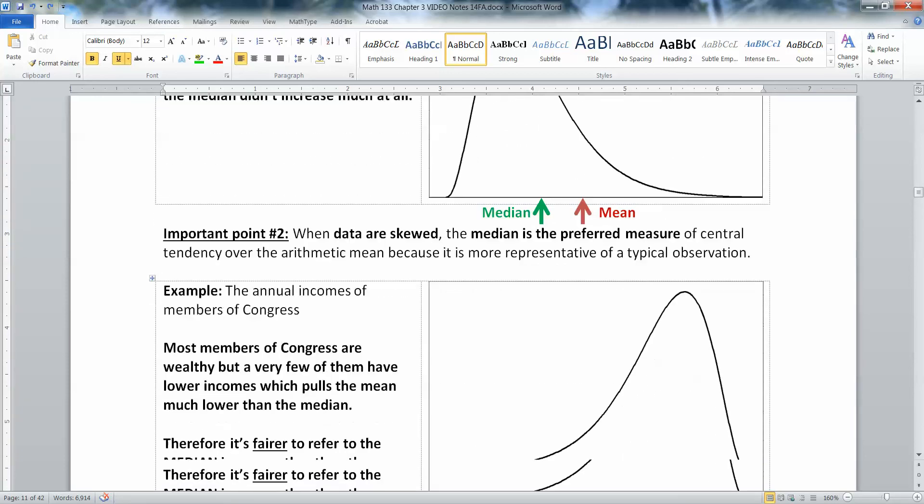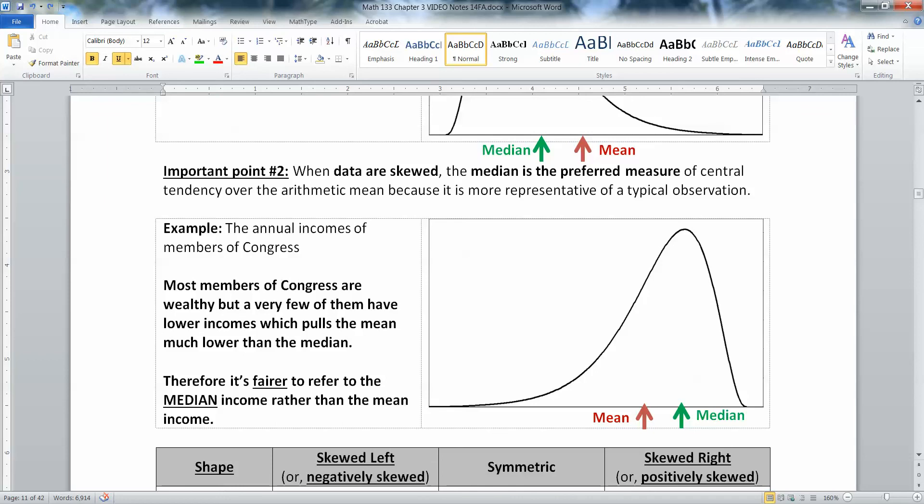Then when data are skewed, the median is preferred because the median is resistant. You would never want to use the mean when you have a badly skewed data set. You'd want to use the median because it resists that skewing. For example, here I have the members of Congress and their incomes. Most members of Congress are actually quite wealthy so they have large incomes. There are a few who do not have huge incomes. So that means that the mean average income for members of Congress is lower, but it's not fair to use it because those few people that don't make a lot of money are pulling the mean down towards them, whereas the median resists that pull. It's fairer to use the median income rather than the mean.